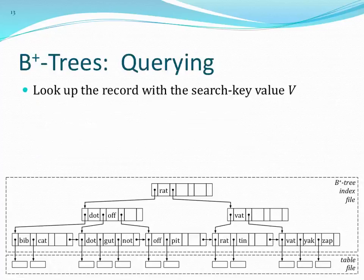Querying: to find a table record using search key value V, we follow the tree structure to find the exact leaf node. For example, to find 'pit': we come to the root and see pit is less than 'rat', so we follow the left pointer. In the next level, pit is greater than 'dot', then greater than 'off', and we can't move further right, so we follow the right pointer. We end up in a leaf and either find 'pit' there or it's not in the index at all.